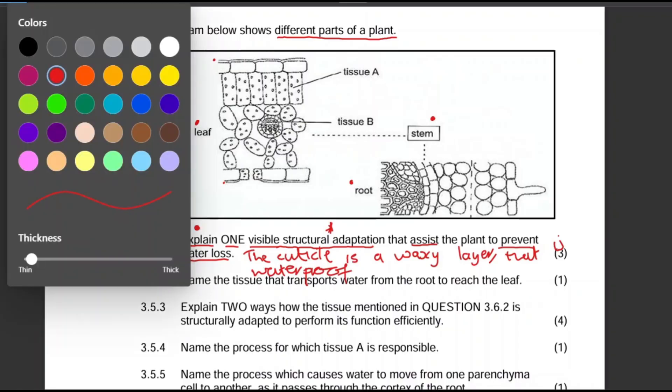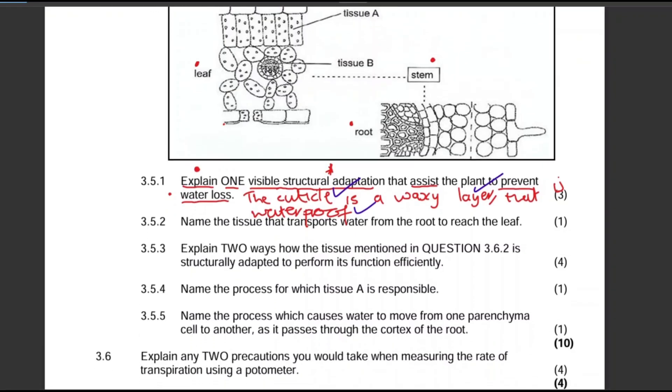Let's move to the next question. Remember that I really enjoy interacting with you in the comment section, so if you have any question, comment, or emoji, just leave something please. Question 3.5.2: Name the tissue that transports water from the root to reach the leaf. This is easy - that's the xylem. Xylem is the tissue that transports water and minerals from the roots up to the stem and then the leaf.